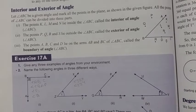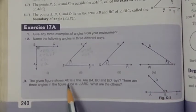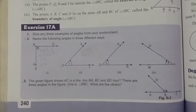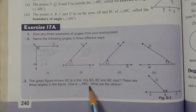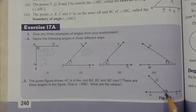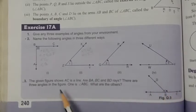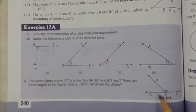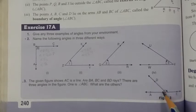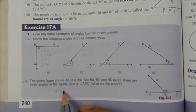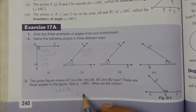So you can write it in your own work. Third question: The given figure shows AC is a line. Rays RB, AB, CB, and TB are given. There are three angles in the figure. One is angle ABC. Another is angle ABD. And the third is angle DBC.